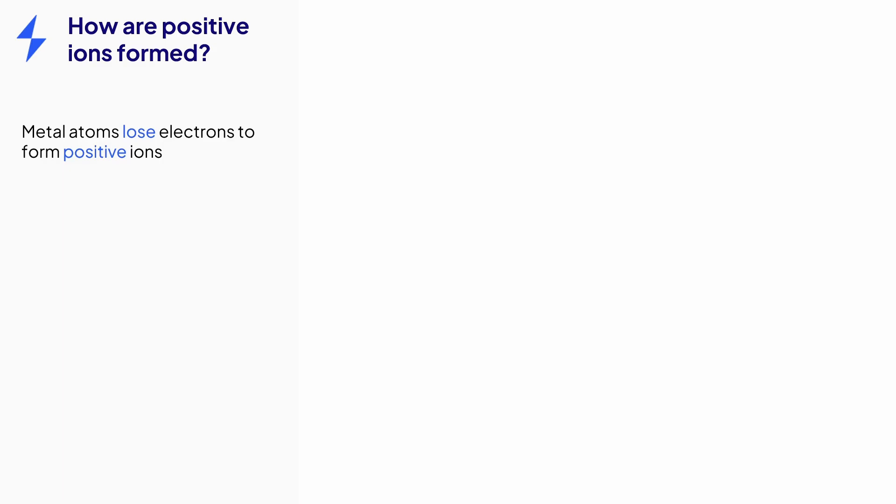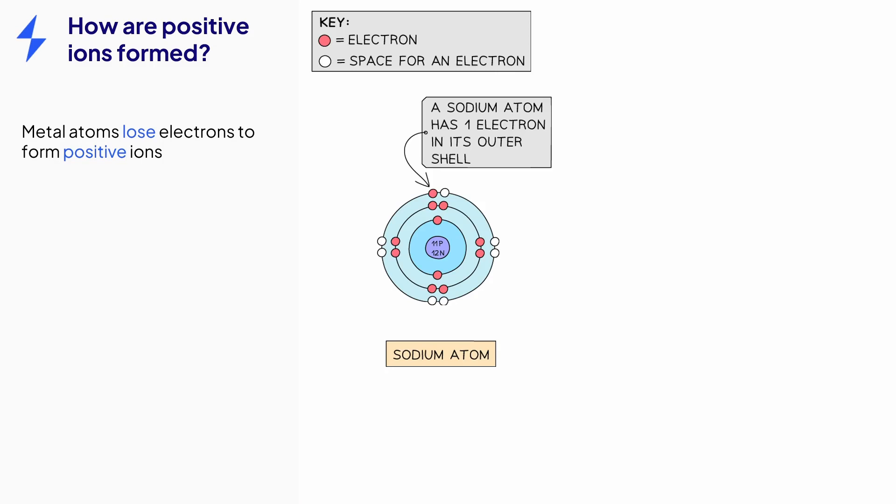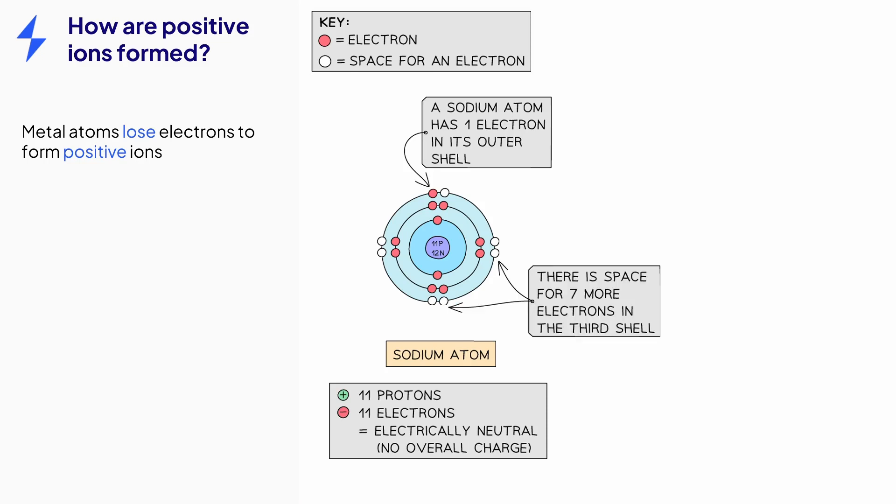Let's take sodium as an example. We can see that an atom of sodium has one electron in its outer shell. It has 11 protons and 11 electrons, so is electrically neutral. Its outer shell is incomplete, as it has space for another seven electrons. To obtain a stable full outer shell of electrons, it can either lose this outer electron or gain seven more electrons to fill the third shell. It actually requires less energy to lose an electron than to gain seven more electrons. So sodium loses its outer electron to form a sodium ion.